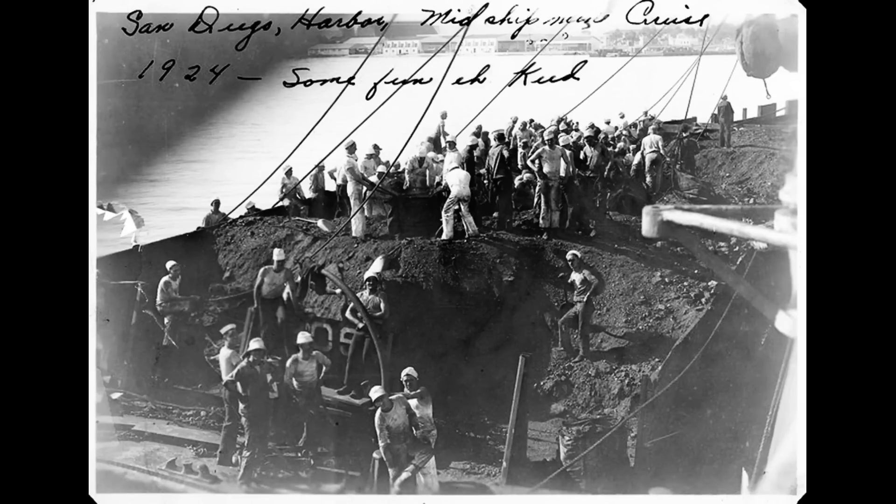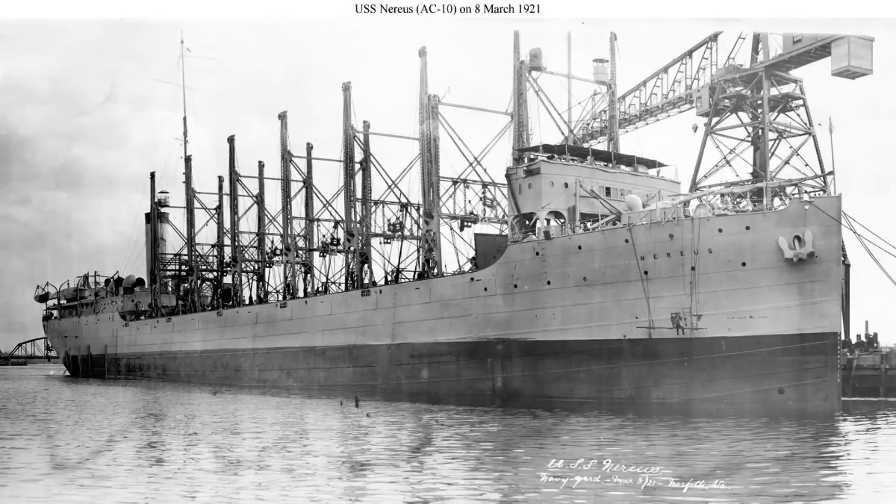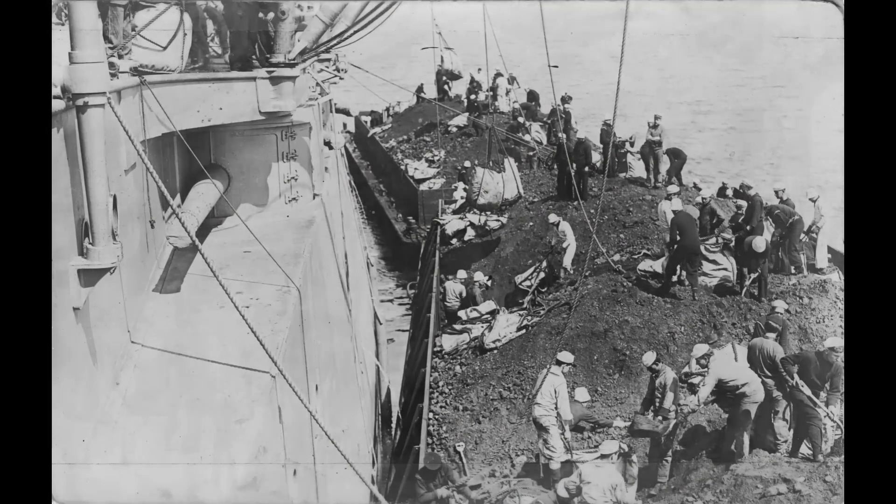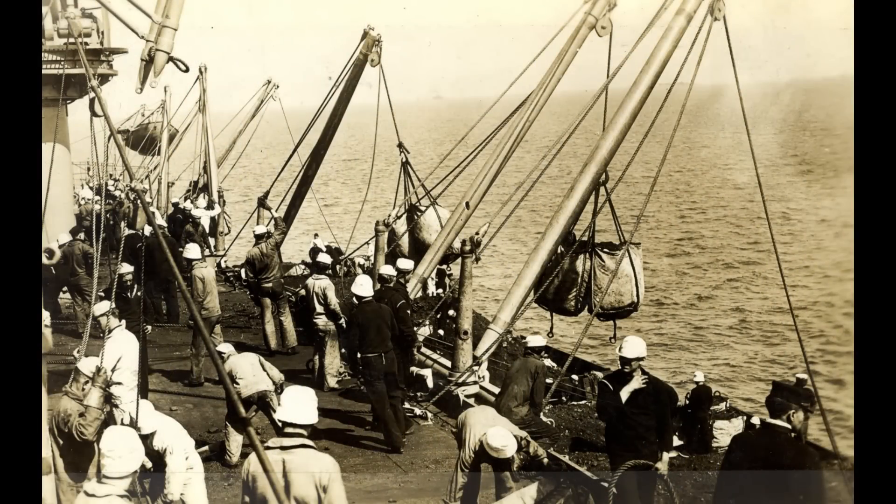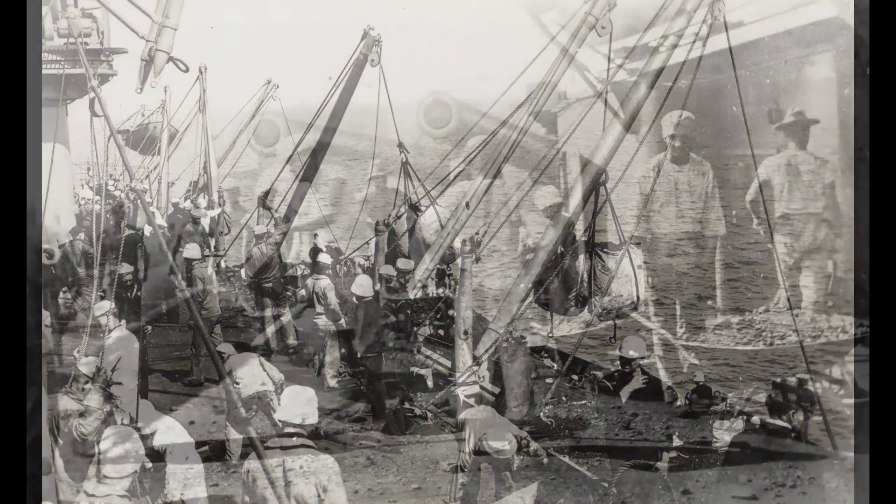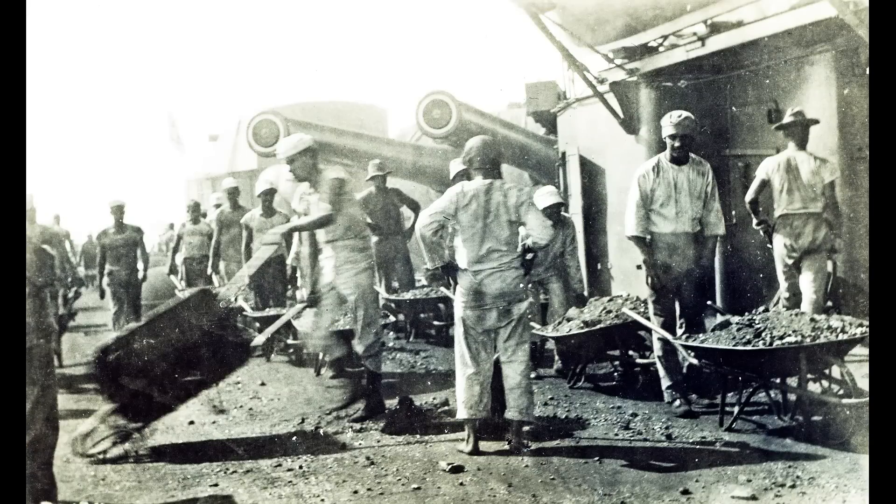Taking on coal required tying up to a fueling dock, a coaling ship called a collier, or barges. It was dumped in huge piles on the ship's main deck using chutes, large buckets, or even hand-loaded bags. From there, it was moved with wheelbarrows and shoveled by hand through deck openings called scuppers into the coal bunkers. Needless to say, no one wept when oil-fired boilers were installed.